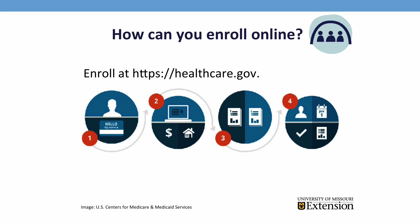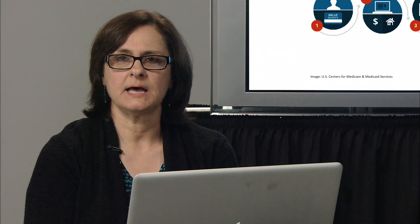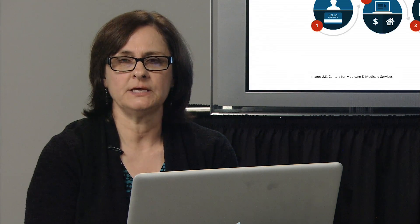Number two, apply. You can apply by providing information about you and your family like income, household size, current health care coverage information, and more. This will help the marketplace find options that meet your needs. You have to have an email account to enroll online, and if you don't have one, there's a way to get one during the enrollment process.